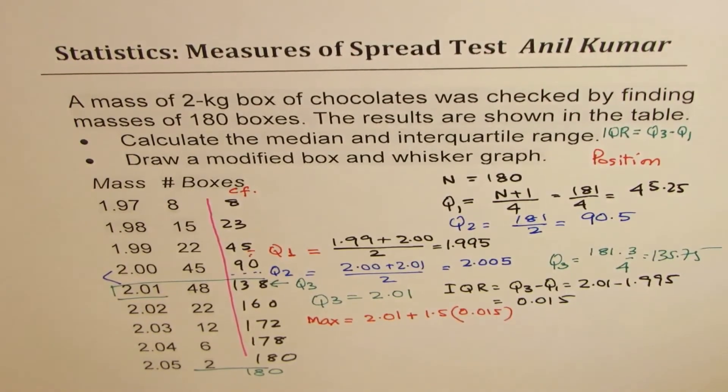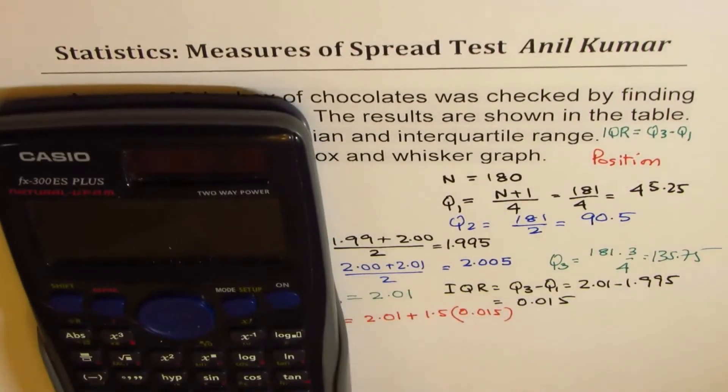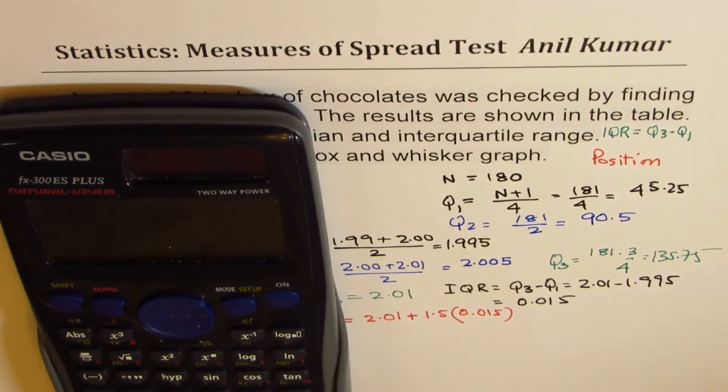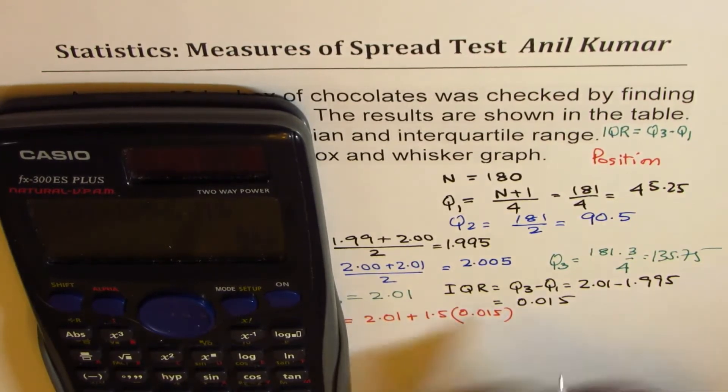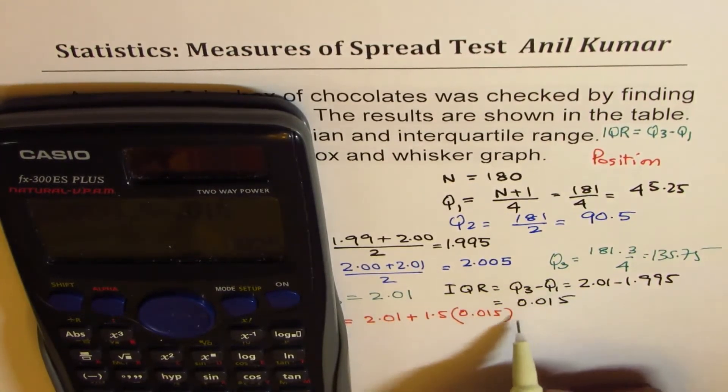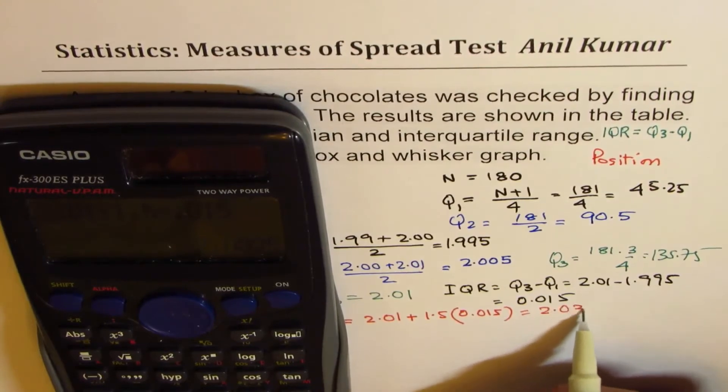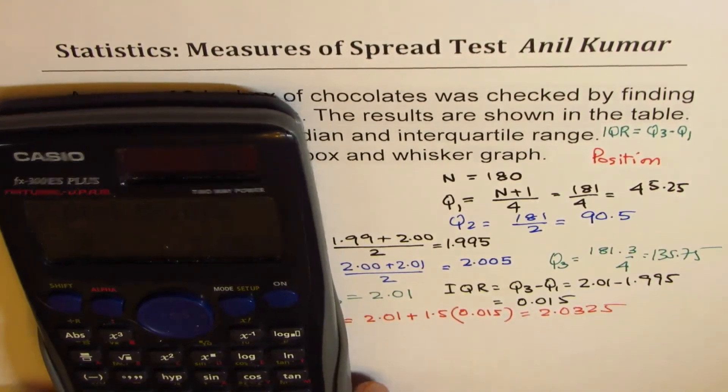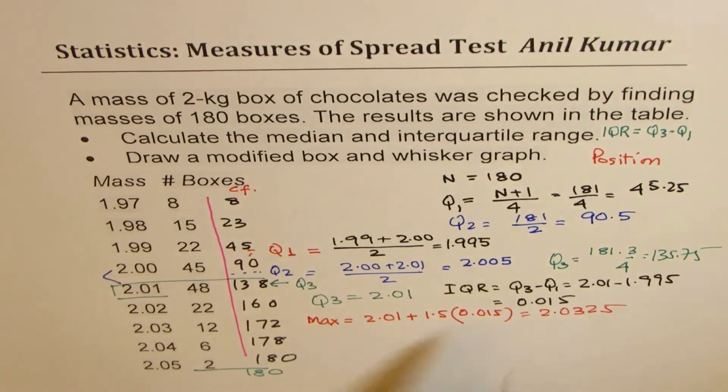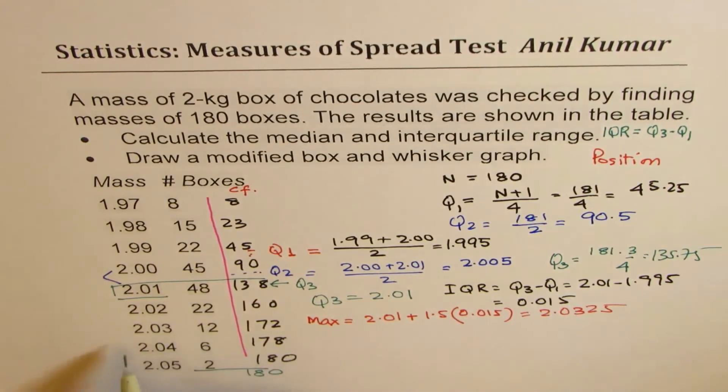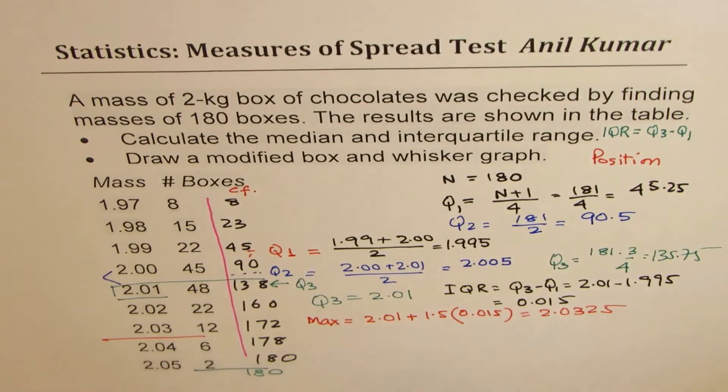Let's calculate this value. So which is 2.01 plus 1.5 times 0.015, that gives you in decimal a value which is 2.0325. So that is the highest value, that means these two are outliers. That is on the maximum side.